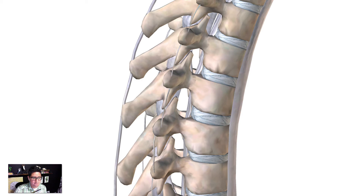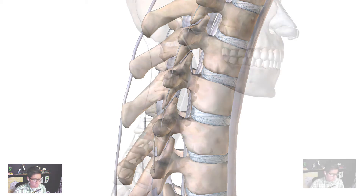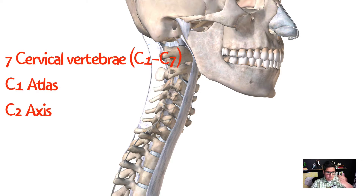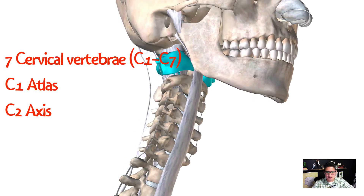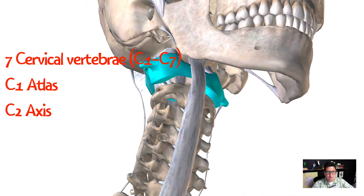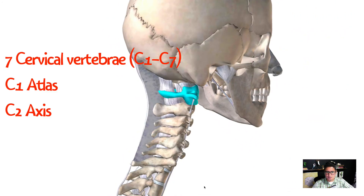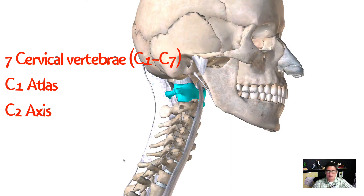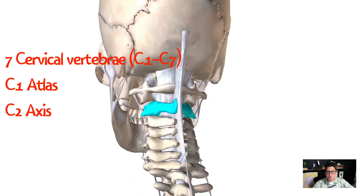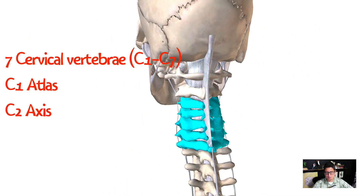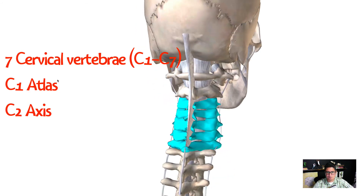Now let's talk about the five main divisions of the vertebral column. The first division is the cervical spine, the cervical vertebrae — there are seven of these. The first one, at the base of the skull, is called the atlas, which supports the weight of the skull and allows head movement. Just below that is the axis, and then C3 through C7 are your remaining cervical vertebrae.